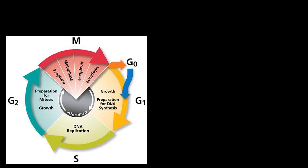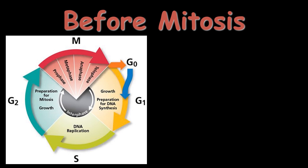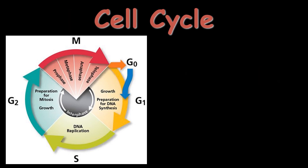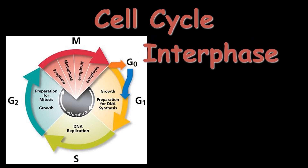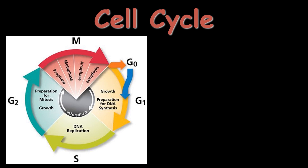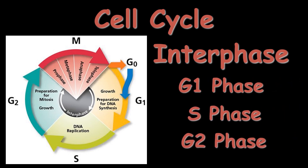Before mitosis, the cell undergoes interphase. The cell cycle consists of two main phases: interphase and M phase. Interphase is the longest phase of the cell cycle and has three sub-phases: G1 phase, S phase, and G2 phase.